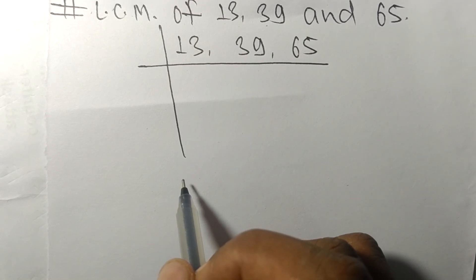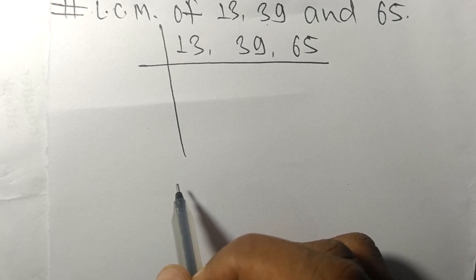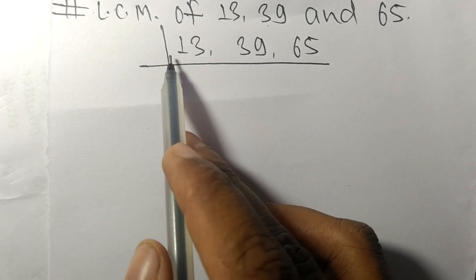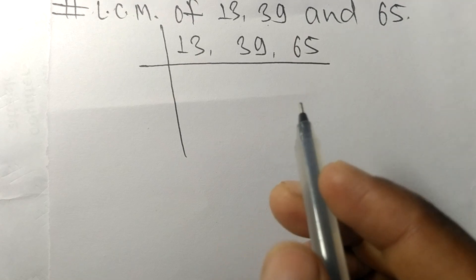To find LCM, we have to choose the lowest number that can exactly divide at least any two of these numbers.